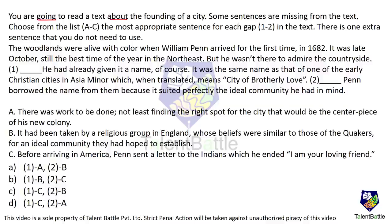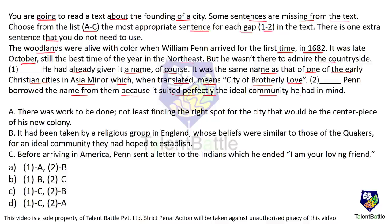You are going to read a text about the founding of a city. Some sentences are missing. Choose from the list A to C the most appropriate sentence for each gap 1 and 2. There is one extra sentence you do not need to use. The text reads: 'The woodlands were alive with color when William Penn arrived for the first time in 1682. It was late October, still the best time of the year in the Northeast. But he wasn't there to admire the countryside.' [Blank 1] 'He had already given it a name, of course. It was the same name as that of one of the early Christian cities in Asia Minor, which when translated means city of brotherly love.' [Blank 2] 'Penn borrowed the name from them because it suited perfectly the ideal community he had in mind.'